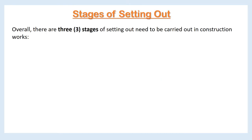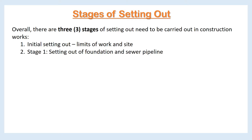Overall, there are three stages of setting out that need to be carried out in construction works: 1. Initial setting out — limits of work and site; 2. Stage 1 — setting out of foundation and sewer pipeline; 3. Stage 2 — setting out the design points. Further explanation will follow.